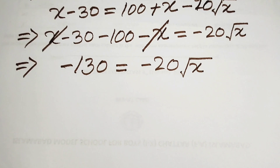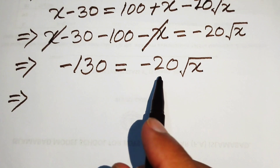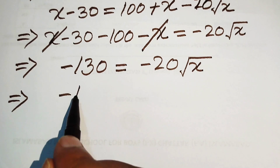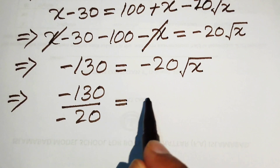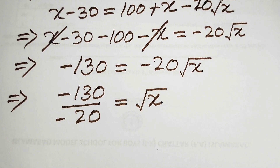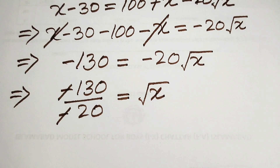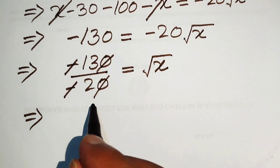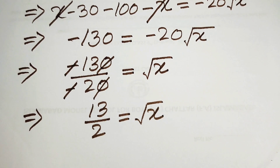In the next step, we move minus 20 to the left hand side by dividing. So we get: minus 130 divided by minus 20 equals square root of x. The negatives cancel, and we simplify the fraction — the zeros cancel — giving us 13 over 2 equals square root of x.